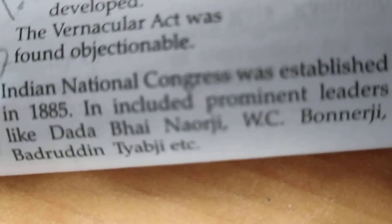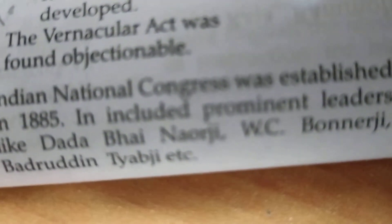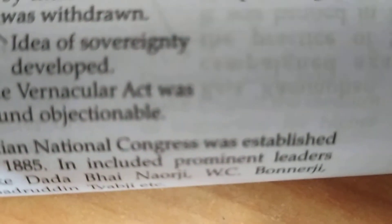The Indian National Congress was established in 1885, including prominent leaders like Dadabhai Naoroji, who was living in England at that time as a publicist and also as a Member of Parliament. He guided the people of the Congress to work and make it more powerful.